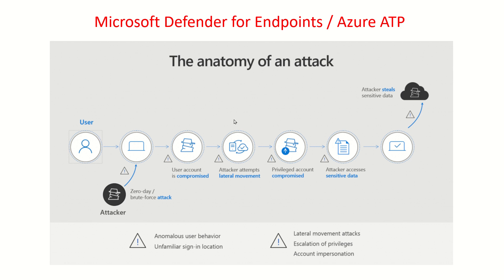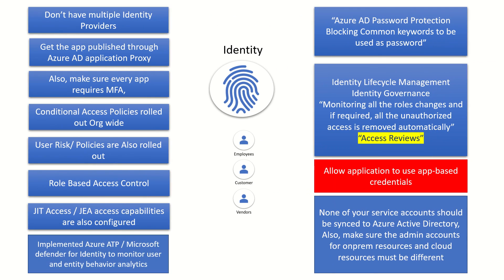This is the typical anatomy of an attack: a compromised user account attempts lateral movements, making the attacker aware of your enterprise environment, then moving on to compromise a privileged account and gaining access to sensitive information. All these activities are anomalies, and Microsoft Defender for Identity or Azure ATP is what will help you get these things highlighted. The last recommendation from a Zero Trust perspective is to make sure you've implemented Microsoft Defender for Identity or Azure ATP to understand how behavior analytics work and how these insights help you determine whether an attack may be happening.